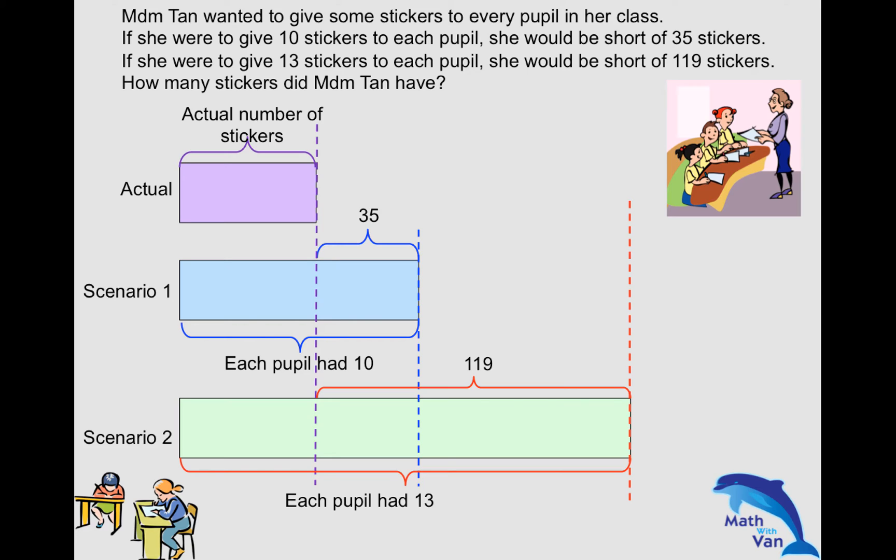So that, now, in Scenario 1, each pupil already had 10. So in order to move on to Scenario 2, each pupil would need an additional 3. So what is the additional number of stickers, total number of stickers that Madame Tan needs so that the pupil would have 13 stickers instead of 10?